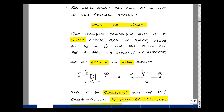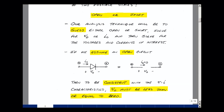For example, if we assumed an open circuit, we replace the diode between the anode and the cathode with an open circuit where the current is zero for all conditions, and there is a voltage across the diode from anode to cathode. To be consistent with the actual diode, we have to find the voltage V sub D and show that it's less than or equal to zero.